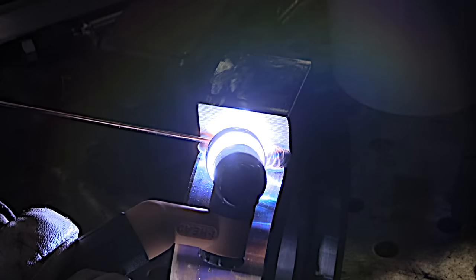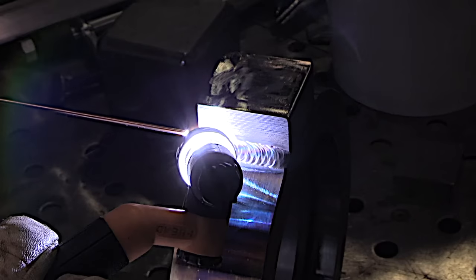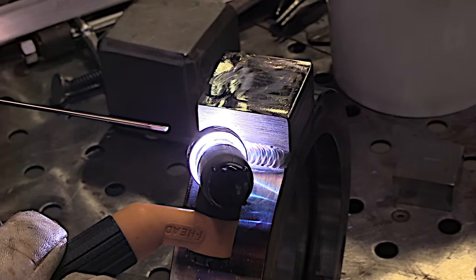Again, some communication with my customer let me know that this was just an alignment fixture. No real strength required. 4130 was specified for dimensional tolerance and stability more so than strength or hardness. So I use ER70S2 wire on this too. I think we can see communication with the customer is an underlying trend here.